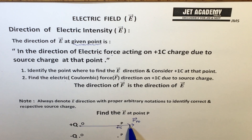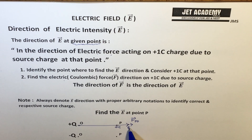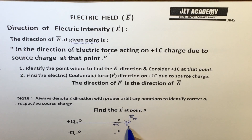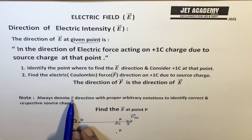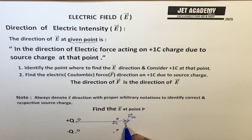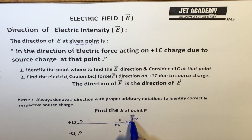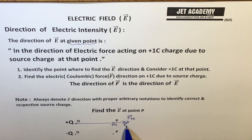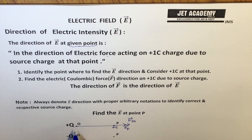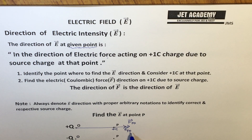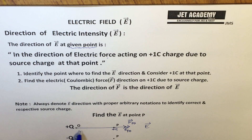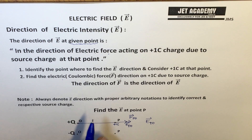Since the force direction and the electric intensity direction are the same, we write E in the direction of F. Using proper notation, the electric intensity at point P due to the source charge at O is represented as E — pointing from O toward P, with the notation indicating 'electric intensity at P due to charge at O.' This arrow is placed at the point where E is being measured.